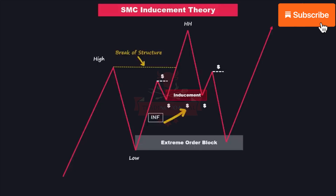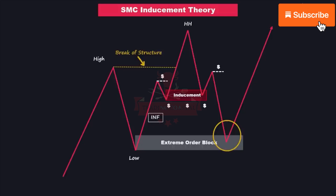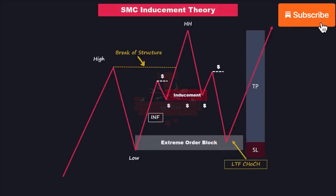Indeed, the price successfully swept the liquidity behind the inducement zone, confirming the anticipated confluence. Our next step is to monitor the price as it enters the higher time frame demand zone. Once the price action is pulled into the higher time frame order block, we shift our focus to the lower time frame. Within the higher time frame demand zone, we search for a change of character in the lower time frame. Additionally, we identify a new order block — in this case, a demand zone on the lower time frame. When these conditions align, we consider a long opportunity, with our target set at the external liquidity, which serves as the take profit level.